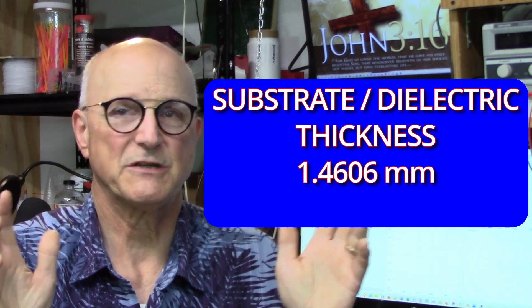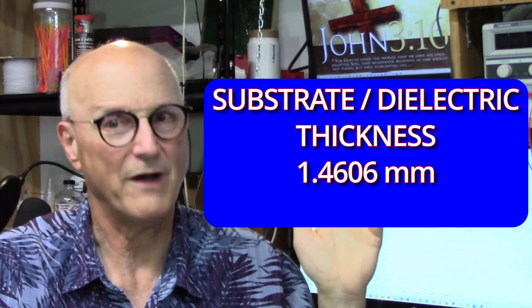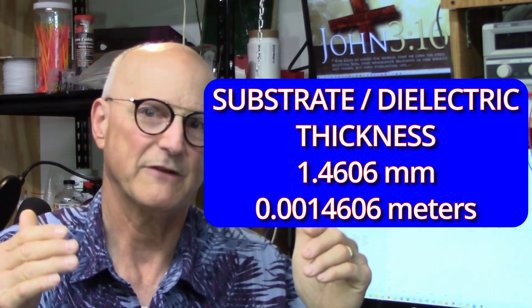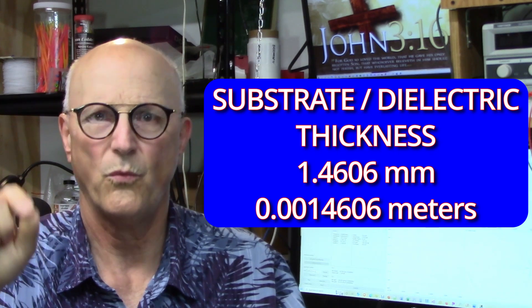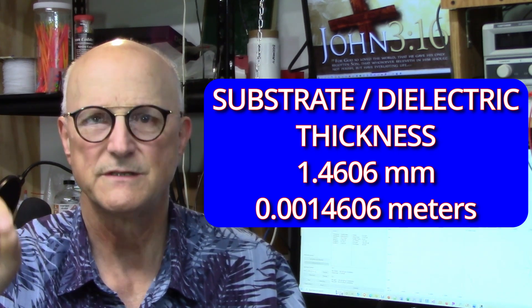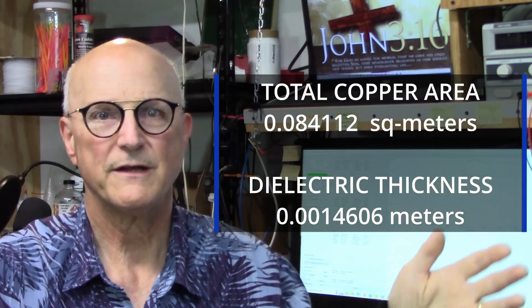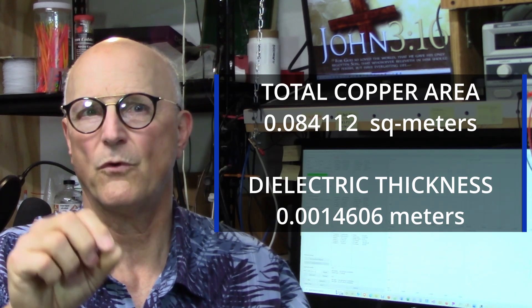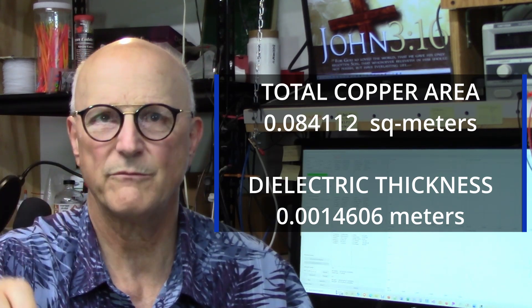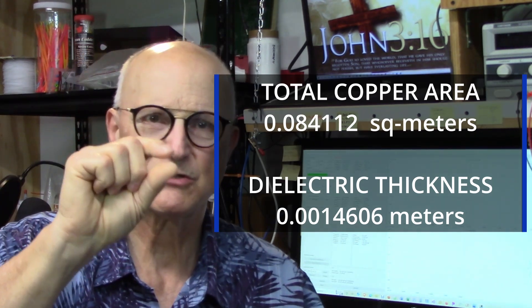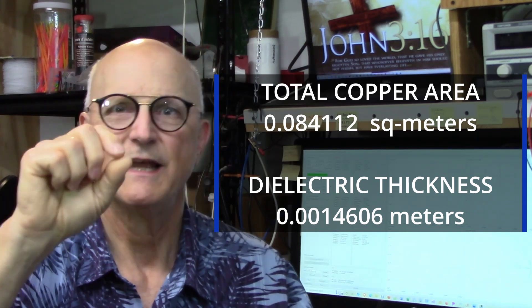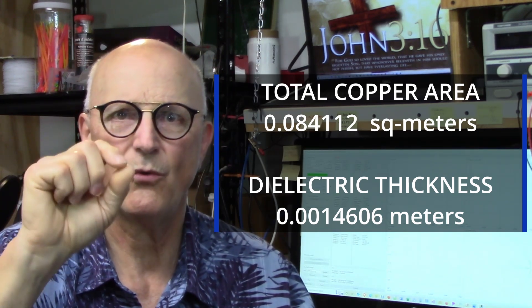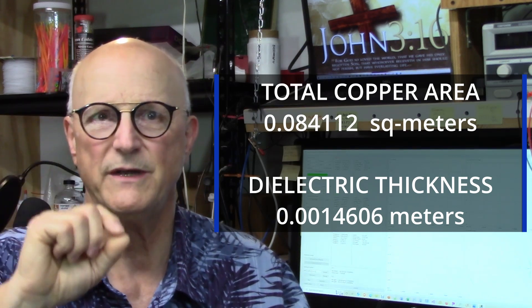Now, we have to change this to meters because our equations want meters. So this comes out to 0.0014606 meters. So let's just tabulate our final results. The total copper area is 0.084112 square meters. And the substrate or dielectric thickness is 0.0014606 meters. Now, we are ready to move on to the next step.